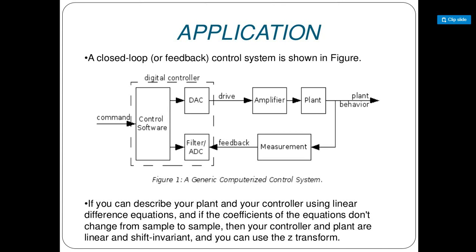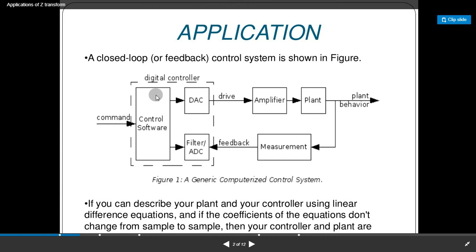The basic property for using Z-transform is that the controller and the plant must be linear and shift-invariant, and the coefficients of the equations must not change from sample to sample. To use Z-transform, the system must be linear and shift-invariant. So the generic computerized control system works as follows.